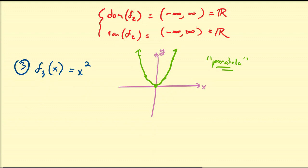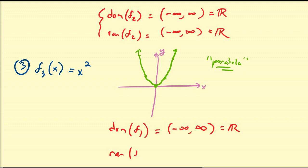The domain of f₃ is also going to be all real numbers, because you can square any number and get a number back. The range of f₃ is going to be 0 to infinity — when you square any real number, you only get 0 or positive numbers. You don't ever get negative numbers out of that.